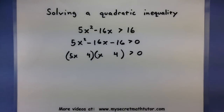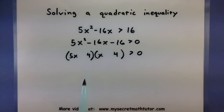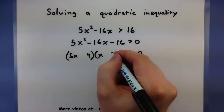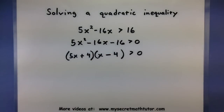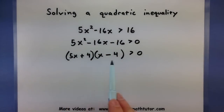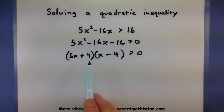Let's double check our outside and inside terms. The outside would be 20 and the inside would be 4, so I think I need a negative 20 and a positive 4. Let's double check our terms — first terms check, outside and inside check, and last terms check.